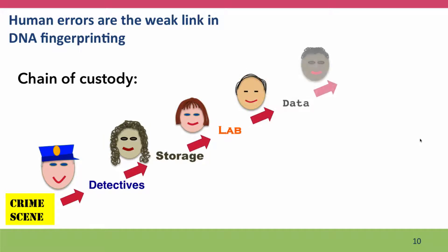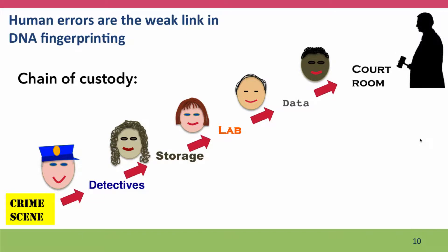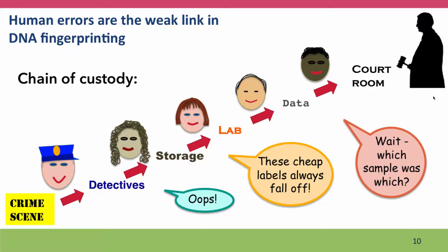The weak link in these studies is the humans involved. The chain of custody becomes vitally important — what happens to the sample after it's collected at the crime scene, handled by detectives, passed into storage, transferred to a laboratory for analysis, and eventually makes its way to the courtroom. There's lots of potential for human errors, and it's these human errors that make DNA fingerprinting not absolutely perfect and give rise to courtroom debates about whether a particular bit of DNA evidence should be admitted.